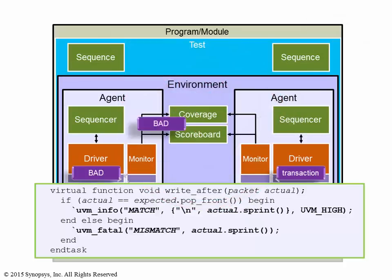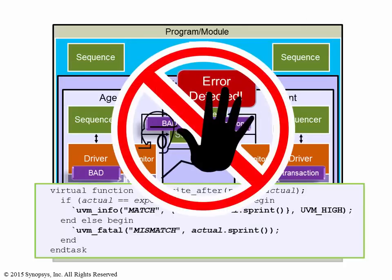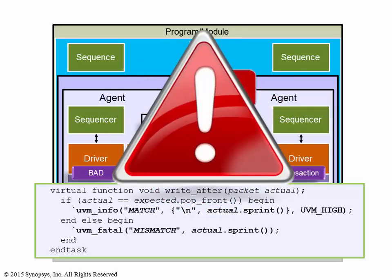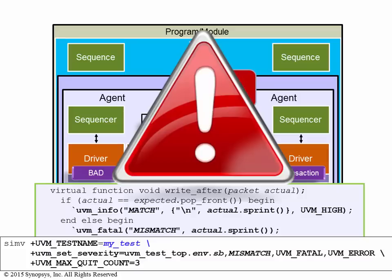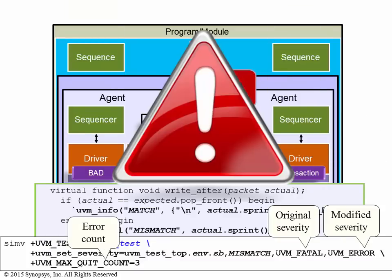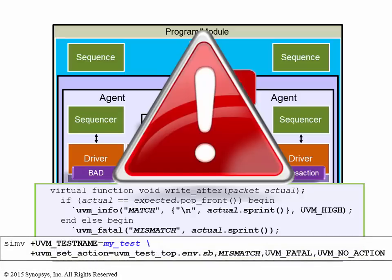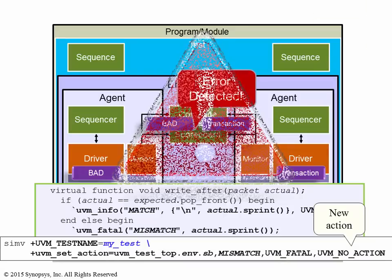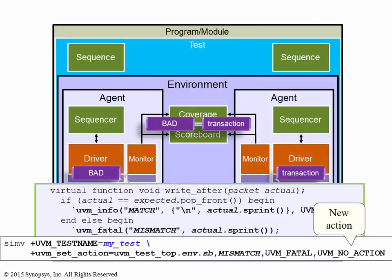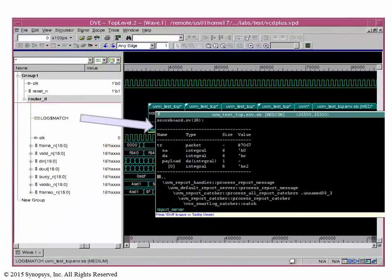Let's take error injection as an example. Even though the original severity is fatal, we can easily change it to error with a simple runtime switch called uvm_set_severity. In this example, we're demoting the fatal to an error severity and then terminating the simulation after three errors. Sometimes during the bring-up process, portions of designs are just not working and you don't care about them at that time. You can disable the failure report messages for that part of the design with the uvm_set_action switch — in this example, telling the reporter to do nothing in a scoreboard object when a fatal error is encountered. You can also see these report messages in the debugger waveform window, which is very helpful during debugging.